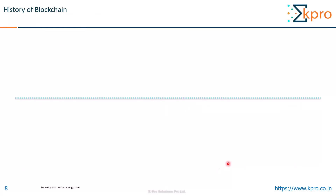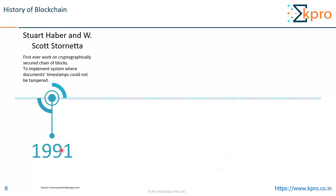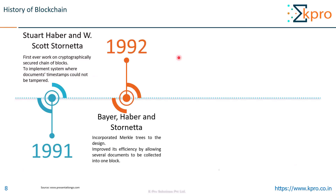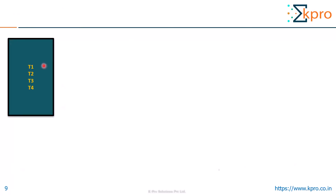Let us see the history of blockchain. In 1991, Stuart Haber and W. Scott Stornetta performed the first ever work on a cryptographically secure chain of blocks, which was mainly implemented to timestamp documents so that they cannot be tampered with. In 1992, Bayer, Haber and Stornetta incorporated Merkle trees to the design. We haven't come across this Merkle trees concept yet, so let me give you a brief overview. Let us consider a block which has four transactions: T1, T2, T3, T4.